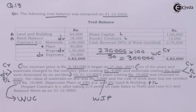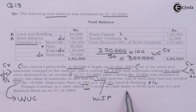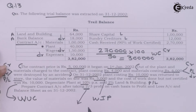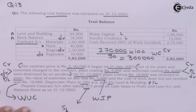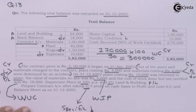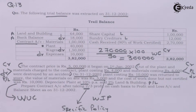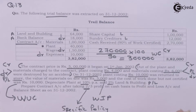We are required to prepare the contract account, profit and loss account, and finally the balance sheet. The profit is to be taken as two-thirds of the profit on a cash basis transferred to profit and loss account — this is the company's specific policy for dividing contract profit when the contract is incomplete. We now proceed to prepare the contract account, profit and loss account, and balance sheet.